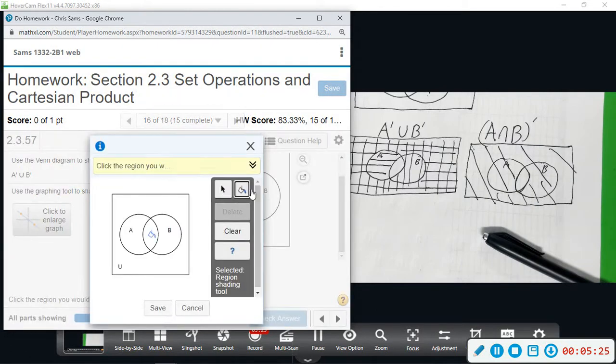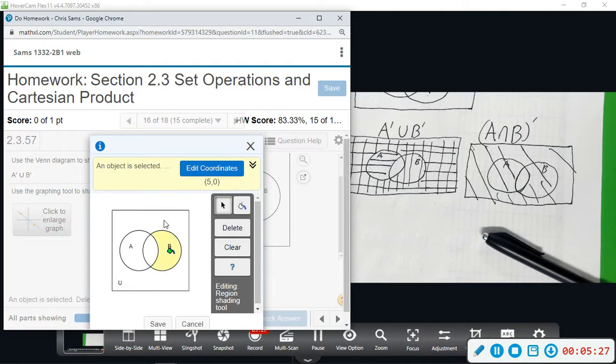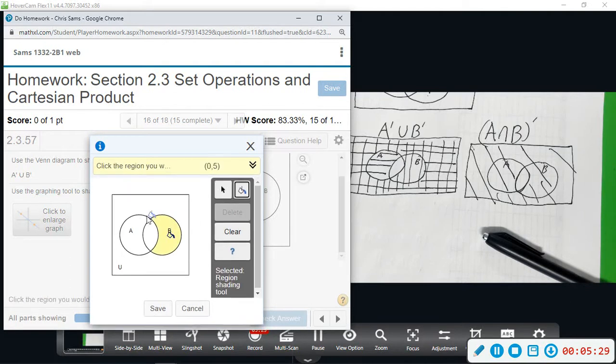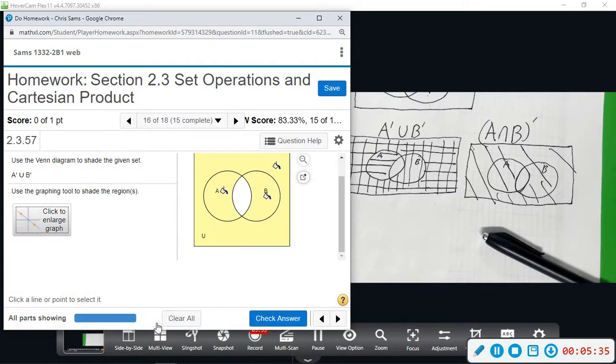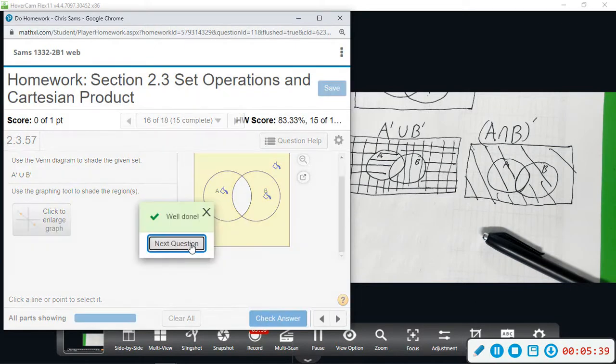So enlarge, we're going to click the shading tool, shade this part and shade this part. We're going to click save. We're done.